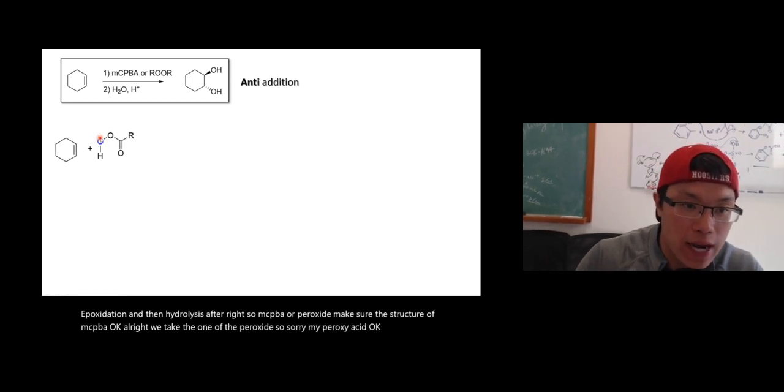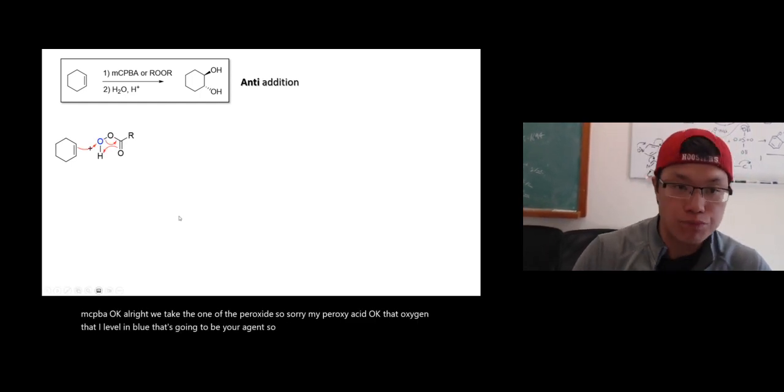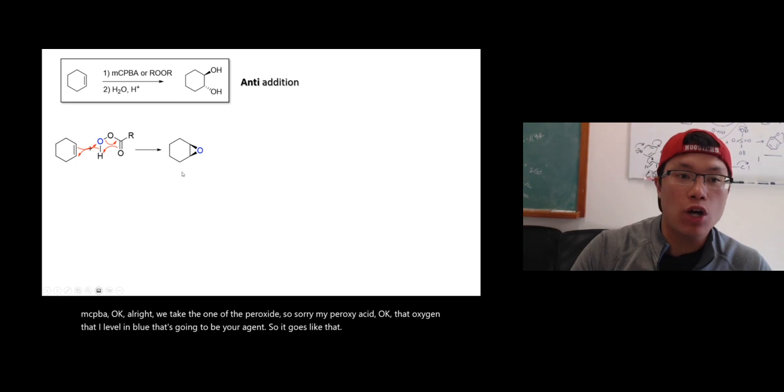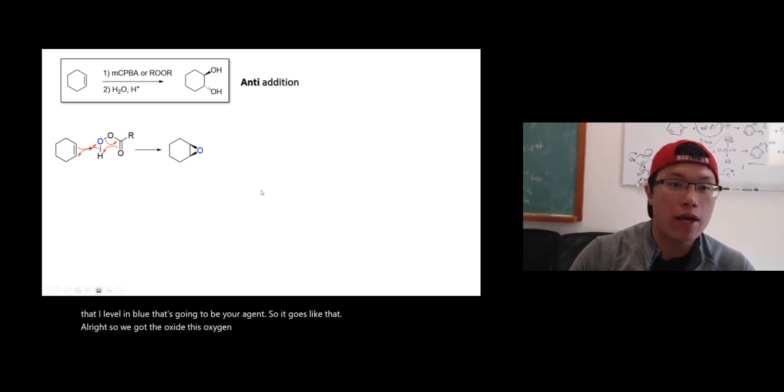That oxygen that I label in blue, that's going to be your reagent. So it goes like that, alright? So we got the oxide, this oxygen on alkene, look like that.